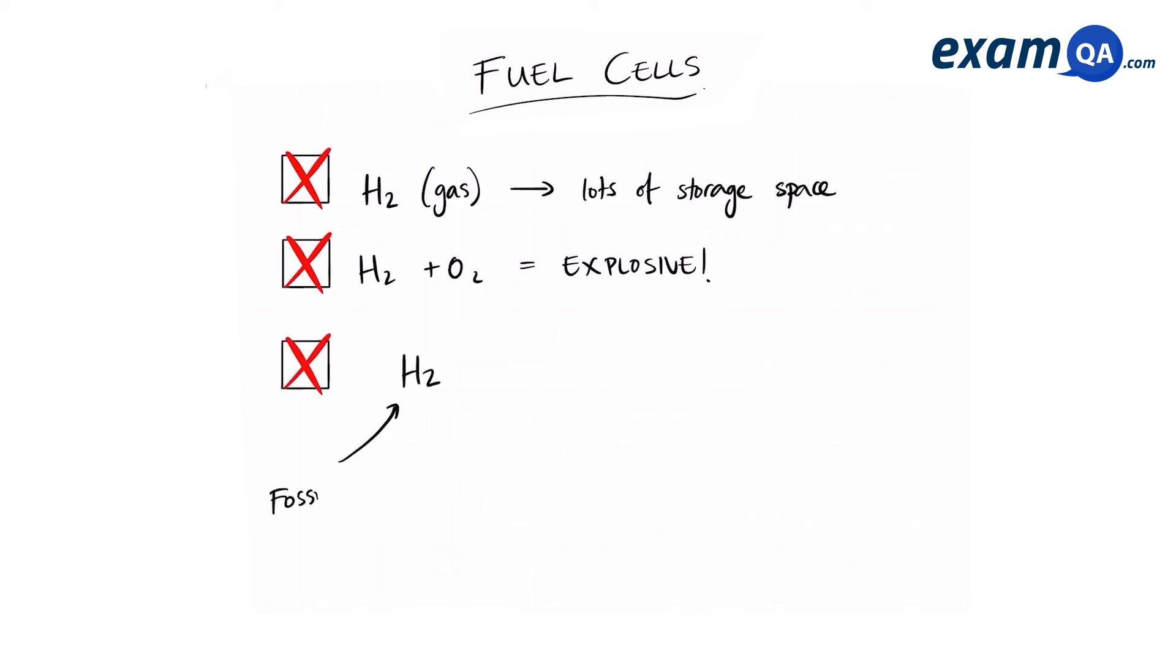The hydrogen from the fuel cell usually comes from fossil fuels or from the electrolysis of water. This means that electricity is needed in the first place to make the fuel cell. Usually, that electricity is made from fossil fuels, so that means we still have to use a little bit of fossil fuels to get hydrogen in the first place.